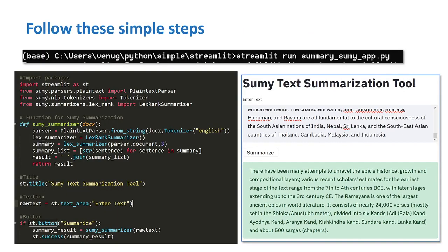Here is our code. First of all we are importing streamlit, which will be useful to create a website for a graphical user interface. After that we are going to import three packages from sumy. The first would be plain text parser, which helps us take input from the user and extract text from string format.